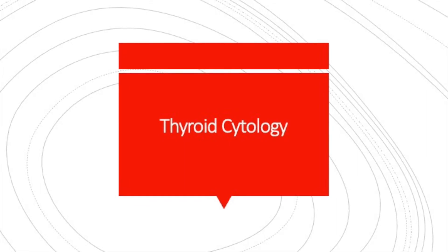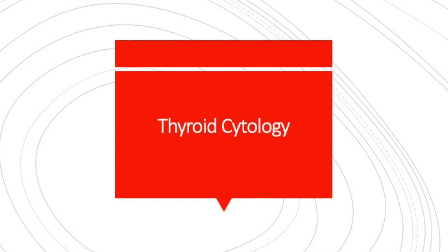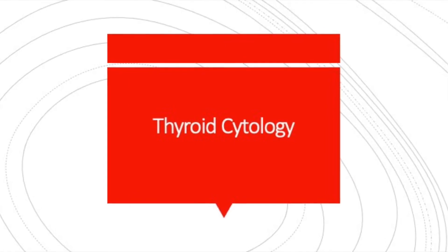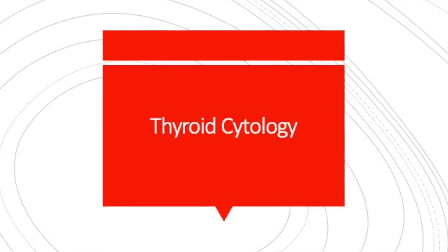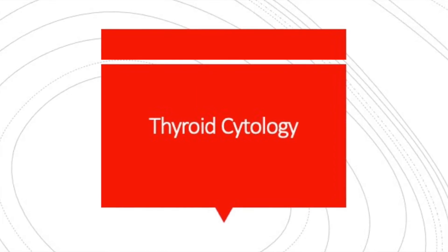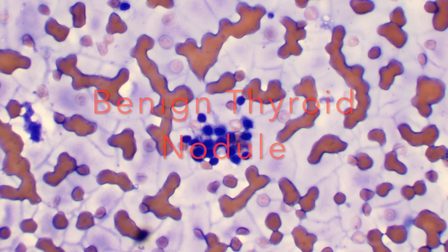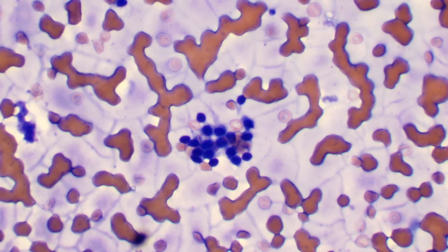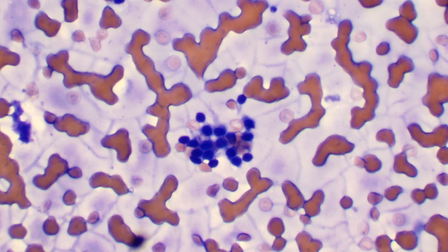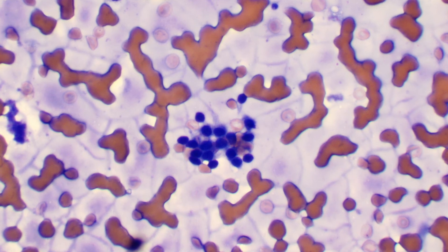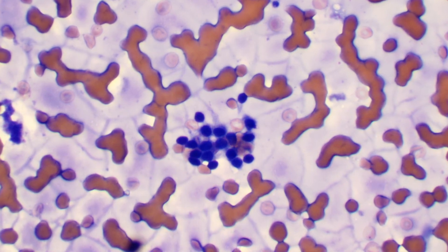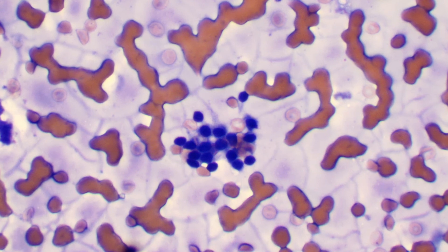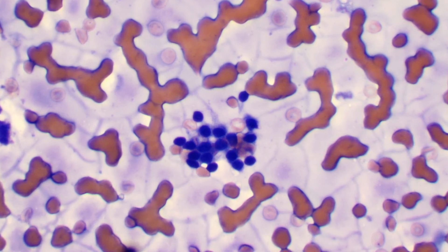Next we're going to look at some examples of cells from the thyroid. The thyroid is a very common organ for us to biopsy and look at in cytology because it is very common for patients to develop nodules in their thyroid gland — your butterfly-shaped organ found in your neck. This first example here is a group of follicular cells in the background of colloid. Follicular cells have small round nuclei with not much cytoplasm, and in the background we see colloid, which causes a cracking-like appearance and a purple color on the slide. This is a good indication that this thyroid nodule is most likely benign and can just be followed up by imaging in a year or so.